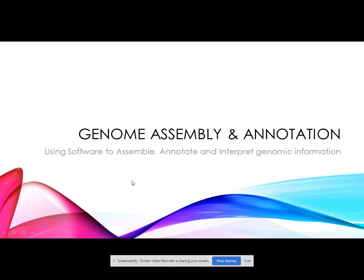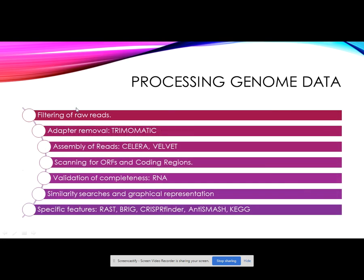Upon completion of the genome sequencing experiment, the sequencer will deliver data. We then move to the bioinformatics aspect — genome assembly and annotation. The first step is to filter the raw reads and eliminate reads which do not meet the quality threshold. You then use Trimmomatic to trim off the adapters, and proceed to assembly using Celera, Velvet, or any assembler provided with the sequencing system. The next step involves scanning for ORFs or open reading frames and coding regions to identify genes and genetic pathways. We can validate genome completeness based on RNA scanning, which identifies the number of tRNAs and rRNAs.